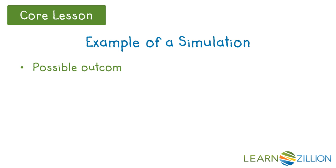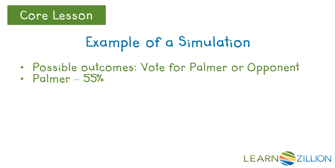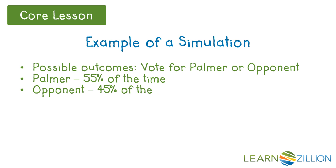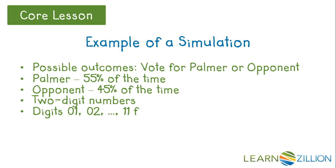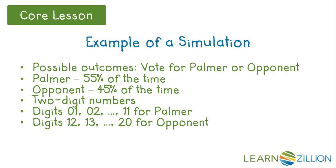Again, there are two possible outcomes: either a vote for Palmer or a vote for his opponent. Palmer has 55% of the vote. This time we have to use more than the digits 0 through 9, since 55% of 10 is 5.5, which is not a whole number. We can use two-digit numbers 01 through 20 because the percentages will give us whole numbers.